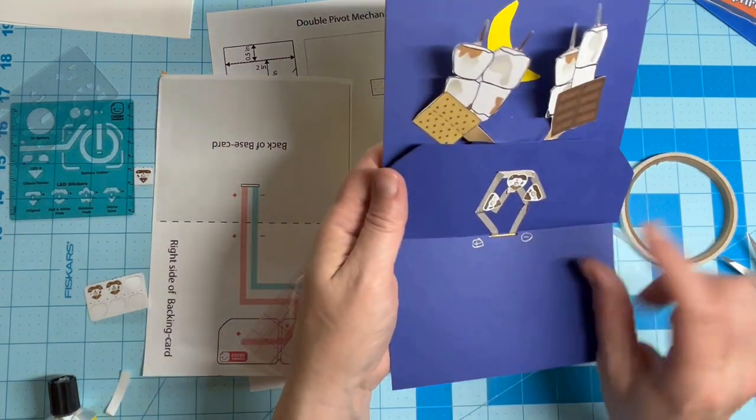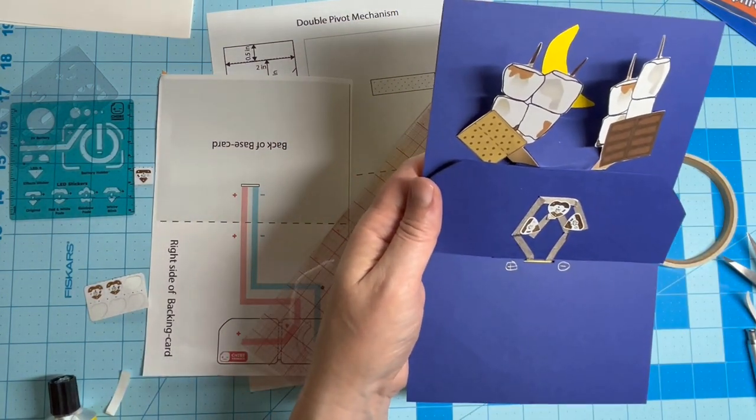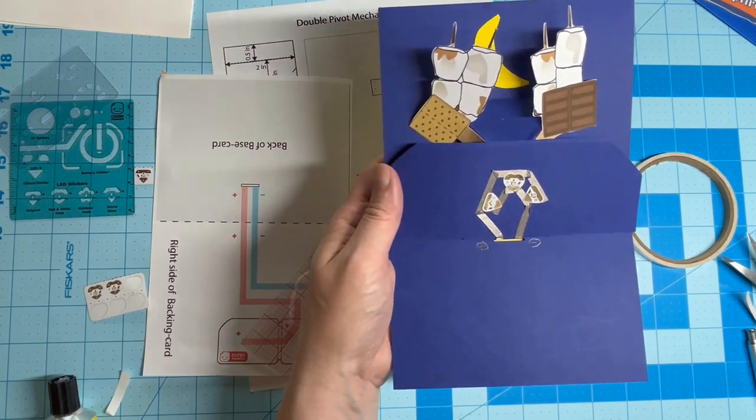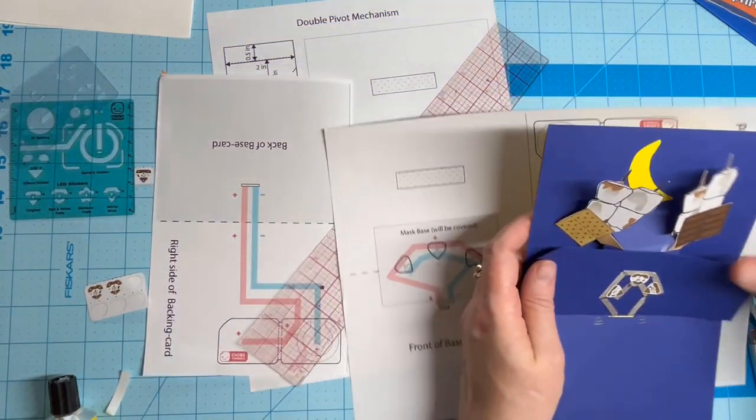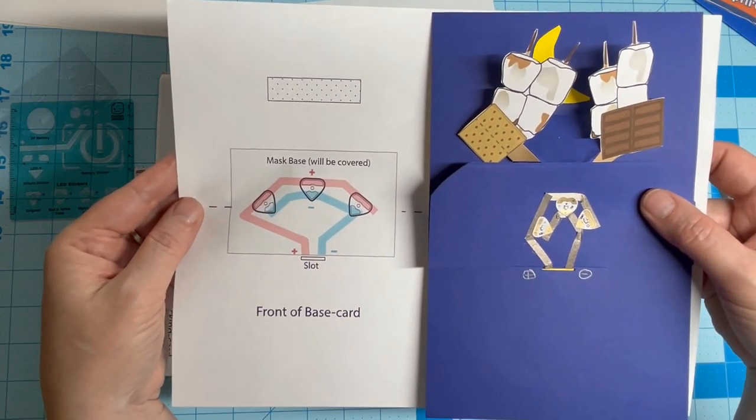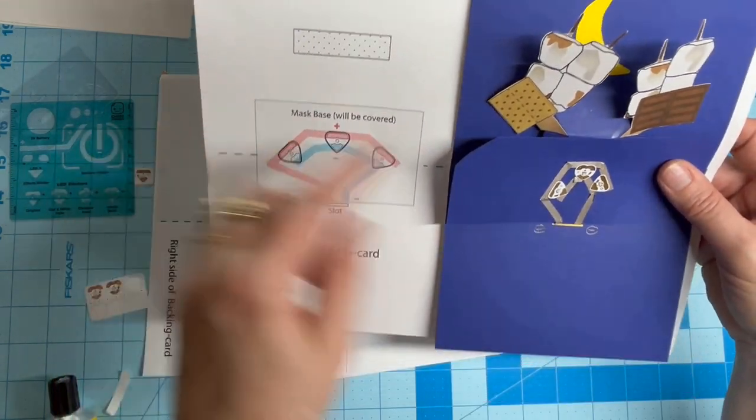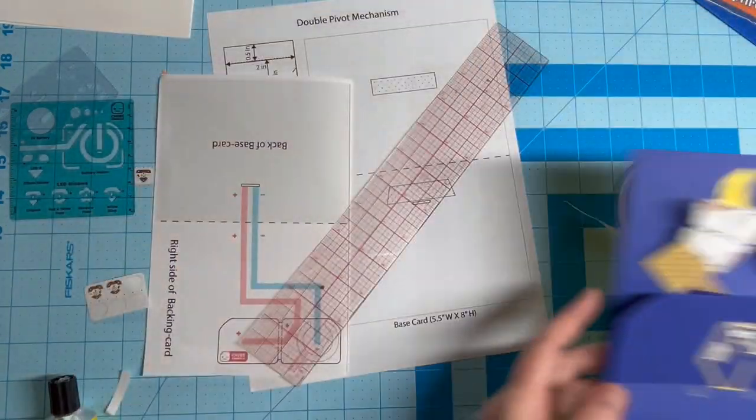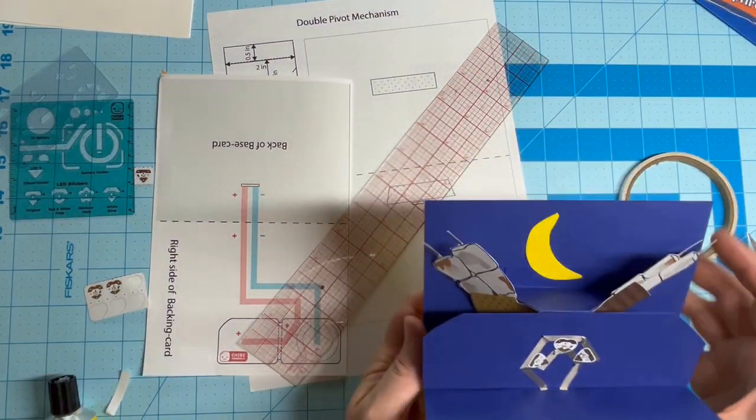In this example, you can see that I've created a parallel circuit with three LED stickers instead of just one. Basically, the creation of the circuit is the same as with the simple circuit, everywhere except for the front panel.